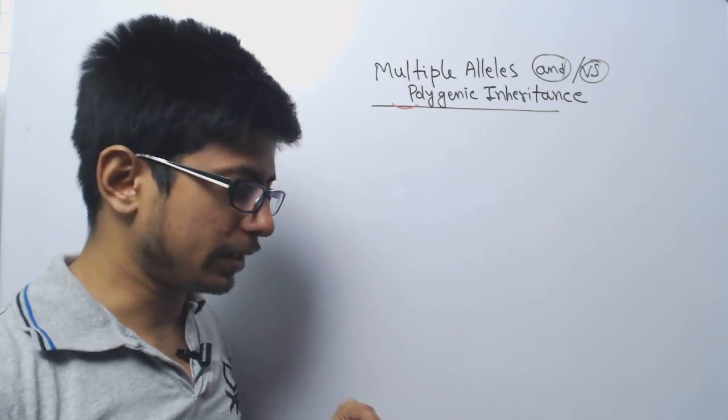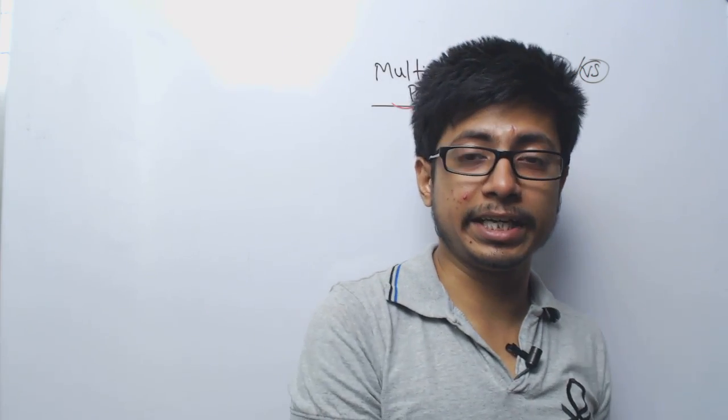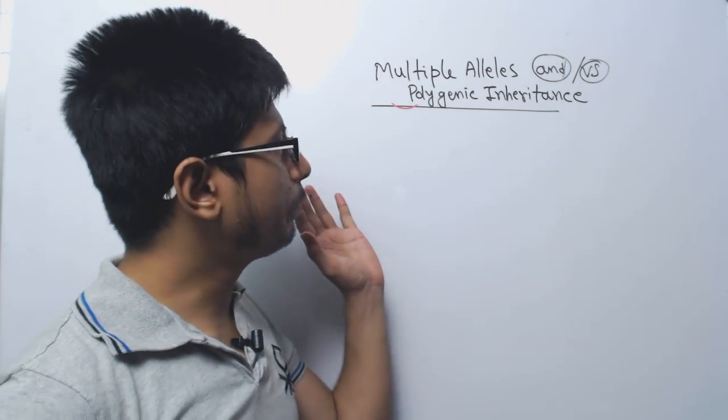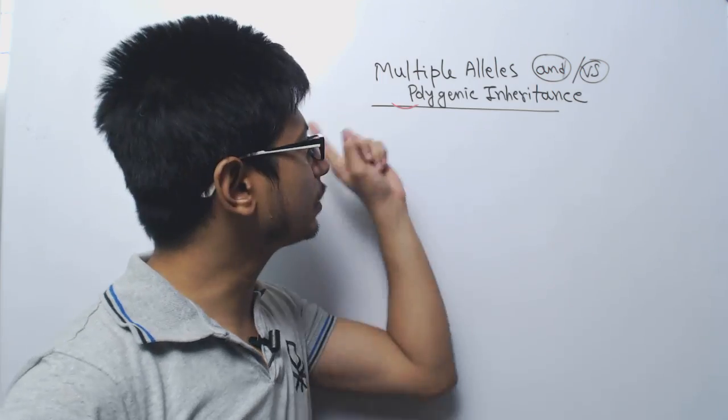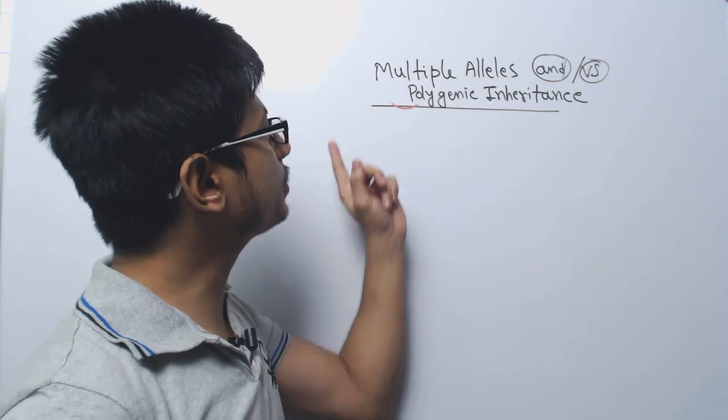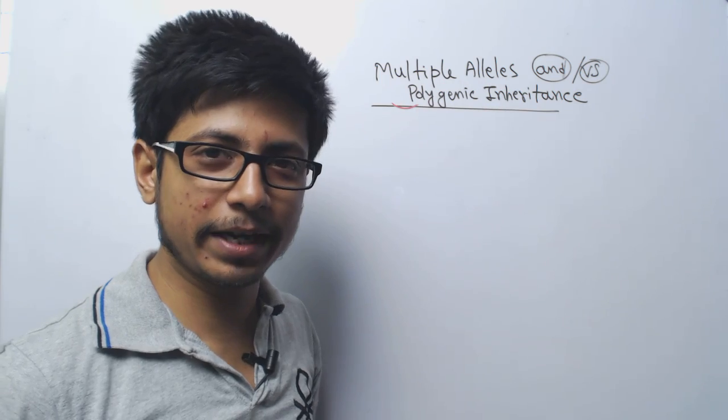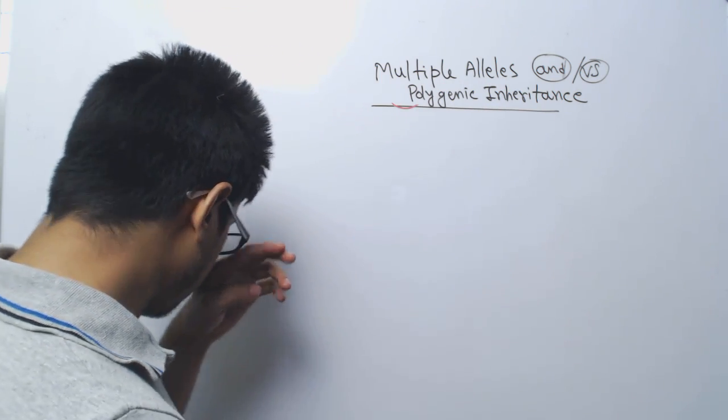You've probably heard these two names and are kind of confused about multiple allele and polygenic inheritance. What are the differences? The most important idea about these two differences to understand is to just look at their names. It will get you the clear idea.